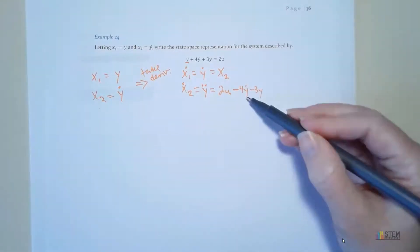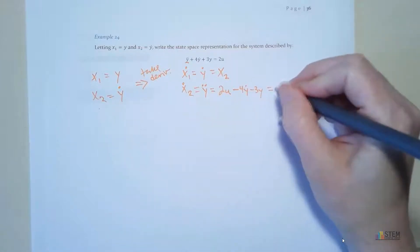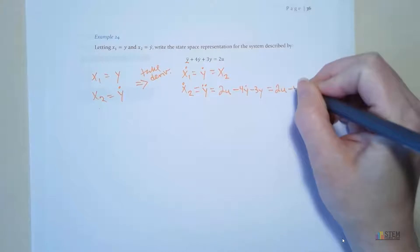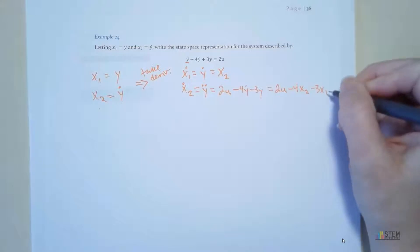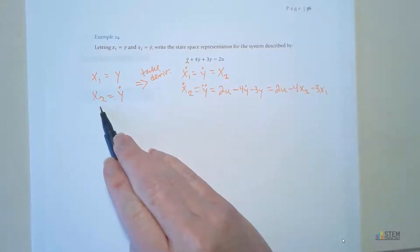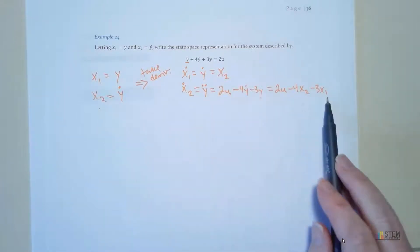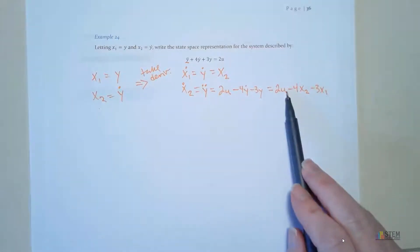Now, I don't want to leave these y terms in here. I want to write everything in terms of these variables. So I'm going to take this, and I'm going to set it equal to 2 times u minus 4 times x2 minus 3 times x1. Because remember, y dot is represented by x2, the y is represented by x1. So I'm just making those substitutions here. Now I've got a system of two first-order differential equations.